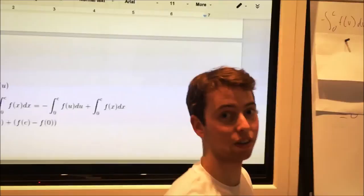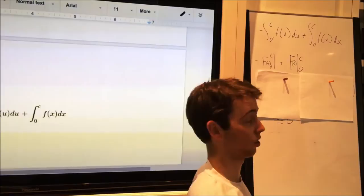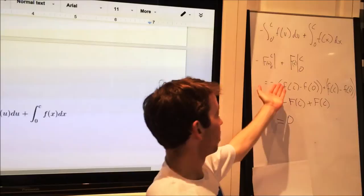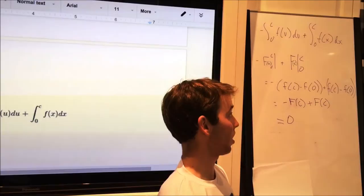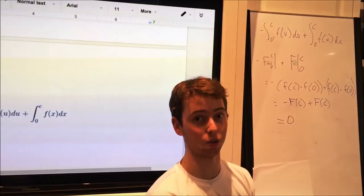Just to clarify on that last step, how we get from this to zero, we solve the integral, and we're using big F to stand for the integral of f of x. And we find this, that negative, in parentheses, big F of c minus big F of zero plus big F of c minus big F of zero is equal to the integral. And then, we find that negative big F of c plus big F of c, and we find it is all equal to zero.